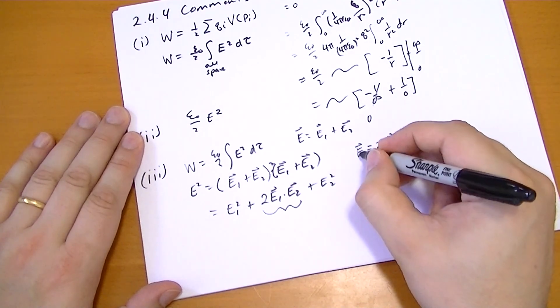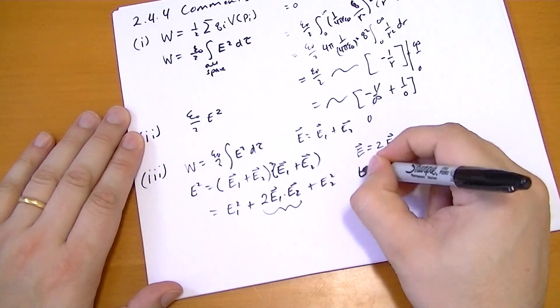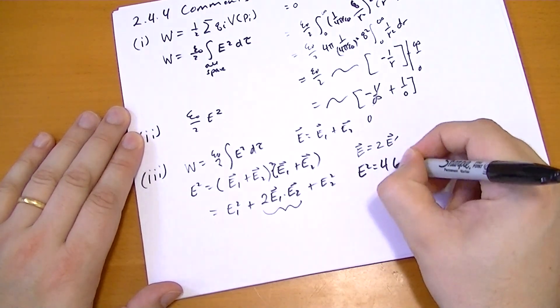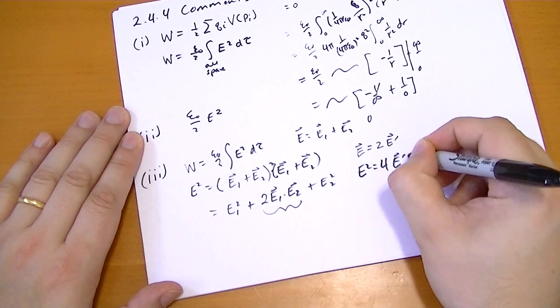Well, that's going to be, you know, this quantity squared, so e squared is going to be 4 e vector prime squared.